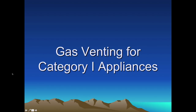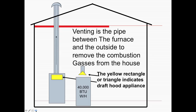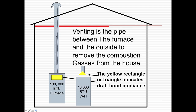This is gas venting for category one appliances. Venting is the piping between the inside and the exhaust on the outside of the structure. Here we're showing a draft hood. The vent temperature is above 140 degrees, it's vented with metal pipe, and the vent is under non-positive pressure. It could be a drafted appliance or a fan-assisted appliance, but the vent is still under non-positive pressure.